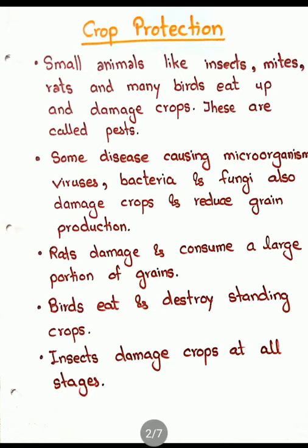These small animals — insects, mites, rats and birds — which cause damage to crops are called pests. They consume a big portion of the crop production.